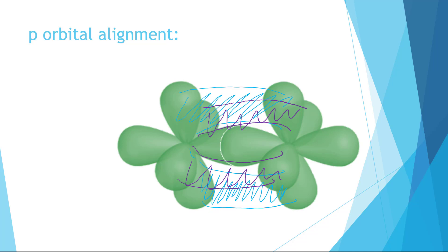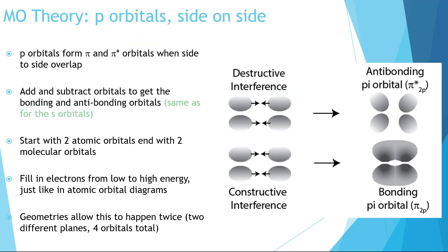When p orbitals overlap side-on-side, they form slightly different shapes. They can overlap constructively or destructively, producing one bonding and one anti-bonding molecular orbital each time. This happens twice because two sets of p orbitals can overlap side-on-side — they're just in different planes. Rather than being symmetrical along the bond axis, each orbital has two lobes with a plane running down the center. We call orbitals with this symmetry pi orbitals. We still put a star on the anti-bonding orbital, but now it's called a pi orbital instead of a sigma orbital.